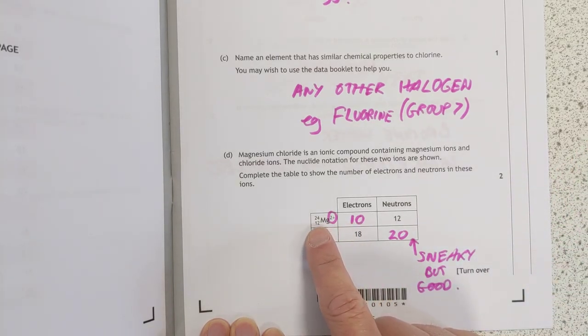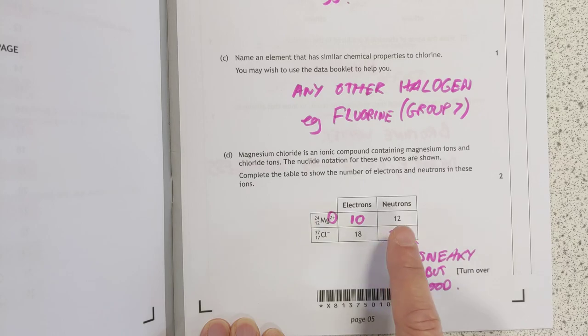Electrons, I know it's got 12 protons to start with, but because it's got a 2-plus charge, you've lost two electrons, so that's 10. This one here, the number of neutrons is the mass number to take away the atomic number, so it's 20.